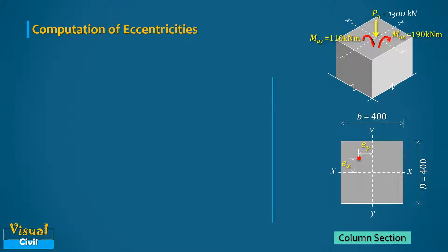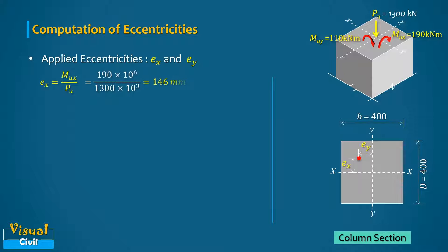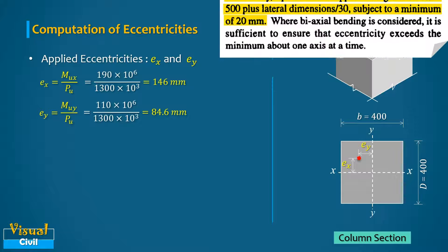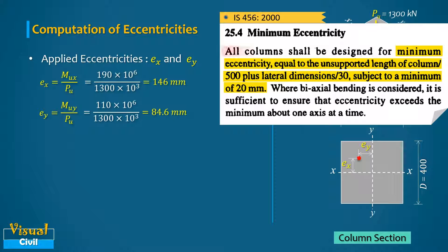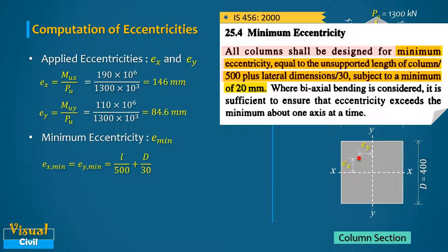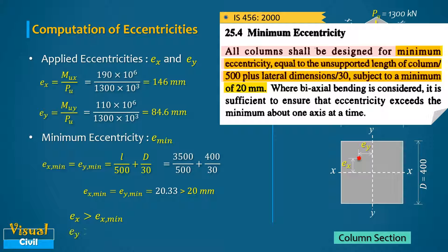Next, compute the eccentricities. The applied eccentricity due to Mux is 146 mm and due to Muy is 84.6 mm. As per Clause 25.4, all columns shall be designed for a minimum eccentricity equal to (unsupported length / 500) + (lateral dimension / 30), subject to a minimum of 20 mm. For this square column, ex_min equals ey_min, which calculates to 20.33 mm. Since the actual eccentricities are greater than the minimum, the column must be designed for axial load and biaxial moment.